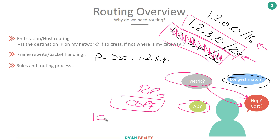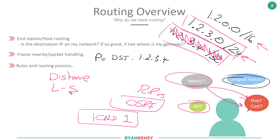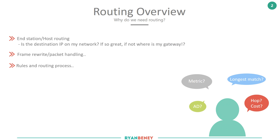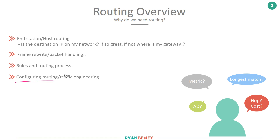Things like OSPF are not in the ICND1 blueprint, at least not in this version. However, we still need to understand the difference between distance vector and link state. Understanding very high-level RIP and OSPF will help understand the differences between these two protocols. Understanding both protocols along with static routing will help us achieve an understanding of the routing rules and the process that the router goes through on a per-hop basis, and in turn help us understand how we would actually configure a static route versus RIP, and why we may do one over the other.